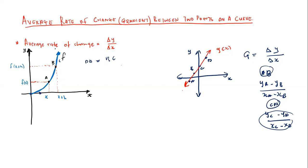When you are given a curve, we cannot determine the gradient of the whole curve using only two points or one gradient. For a linear function, you can use any two points — it doesn't matter which — and the gradient will be the same. But for a curve, using two points will not give you the gradient of f. This is where we involve calculus.